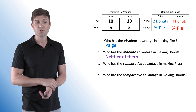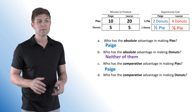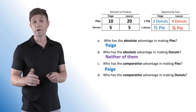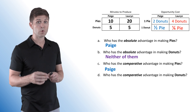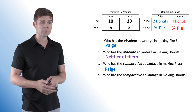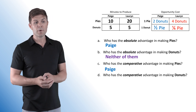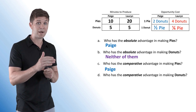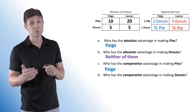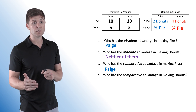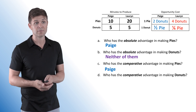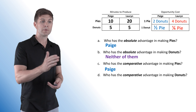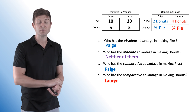Who has the comparative advantage in making pies? That goes to Paige — she only sacrifices two donuts to make one pie, while Lauren sacrifices four donuts. She has the lower opportunity cost. Who has the comparative advantage in making donuts? Because Paige has it in pies, we can almost assume it goes to Lauren — and the chart confirms it. She sacrifices one-quarter of a pie compared to Paige's half pie.